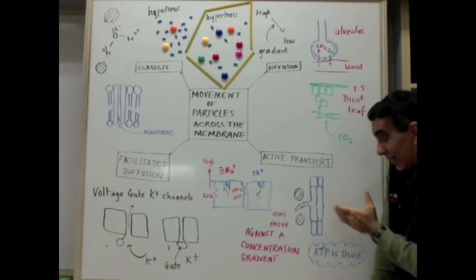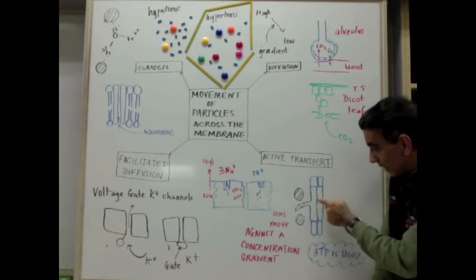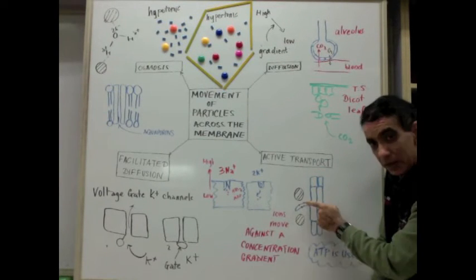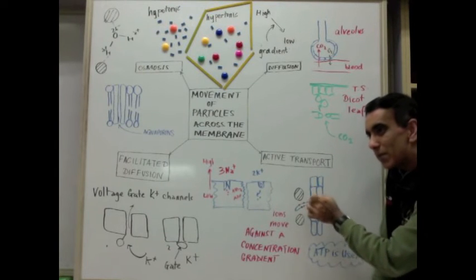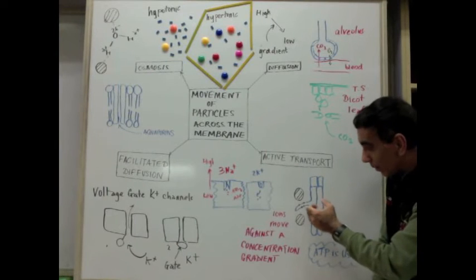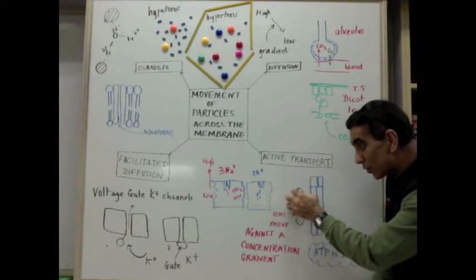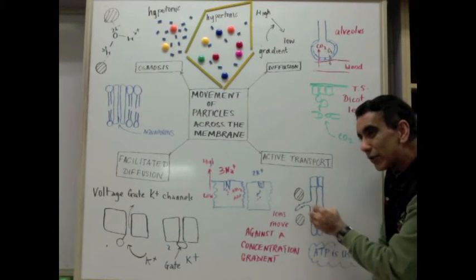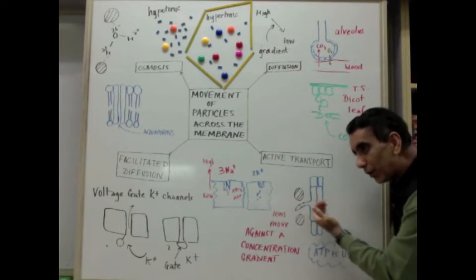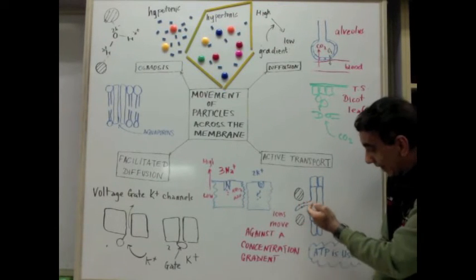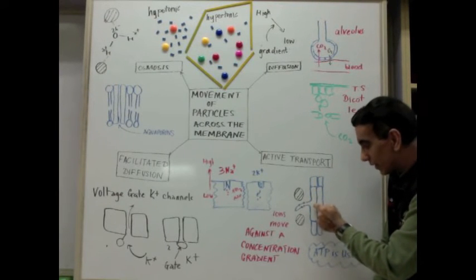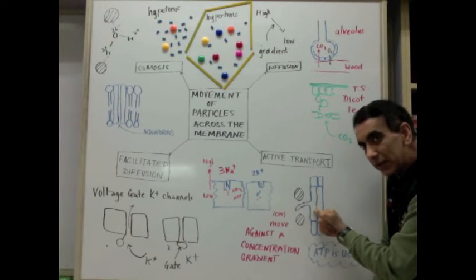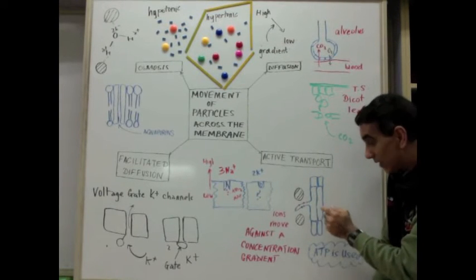Another area where active transport occurs is in the root hair of plants. These pots symbolize a range of transmembrane proteins, all there to pump ions in from the soil against their concentration gradient, to pull ions like magnesium against their concentration gradient, and to build up a fairly high concentration or hypertonic solution inside of the root cells.